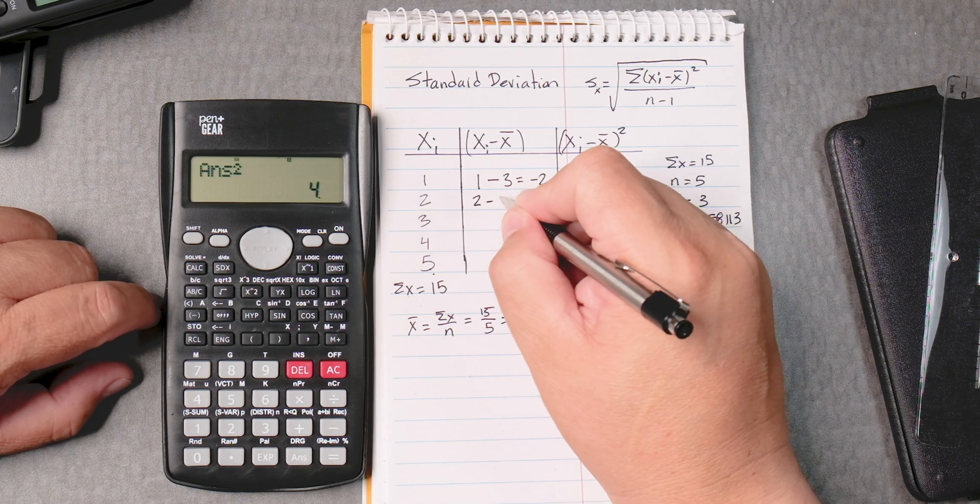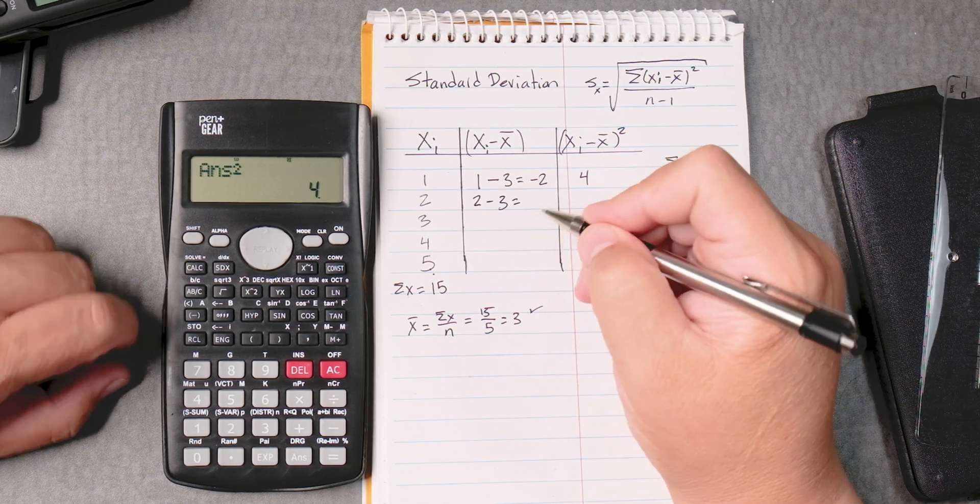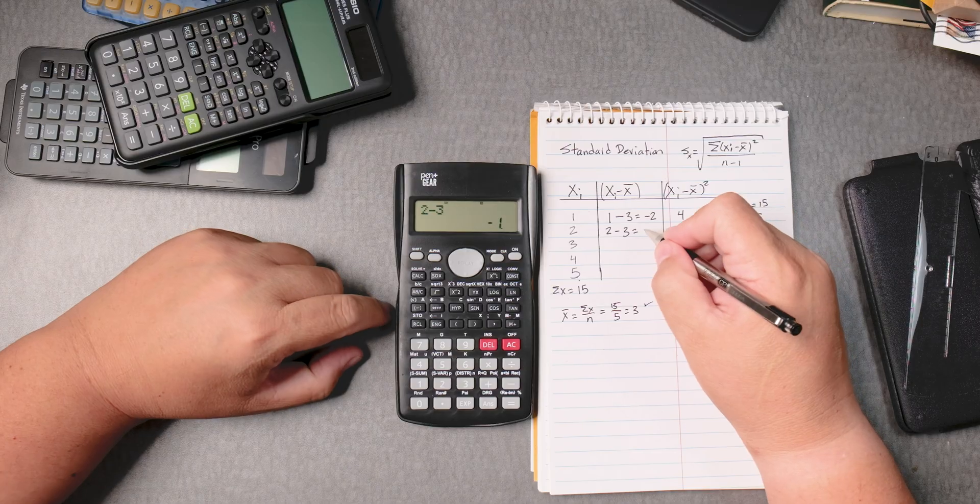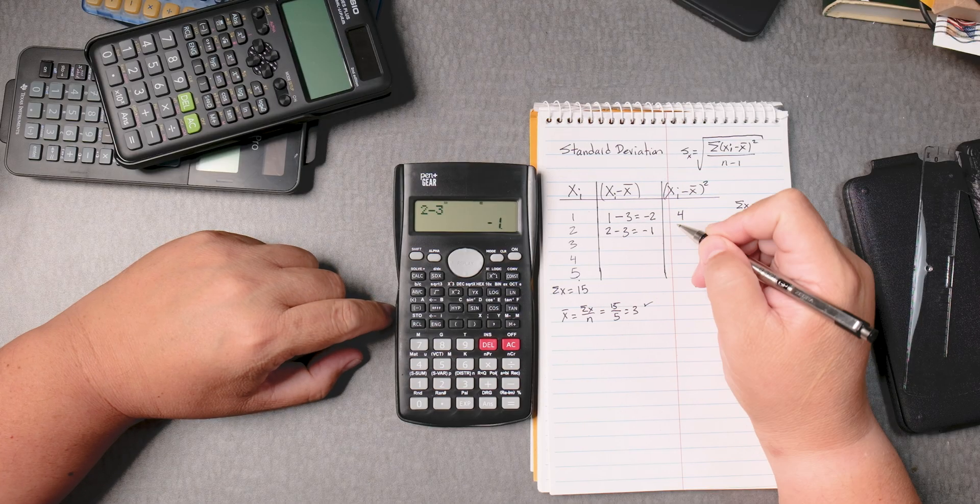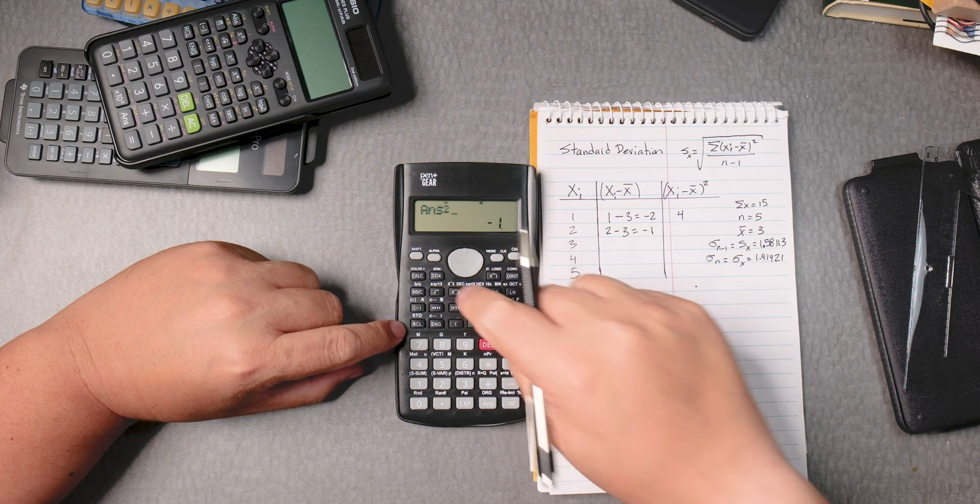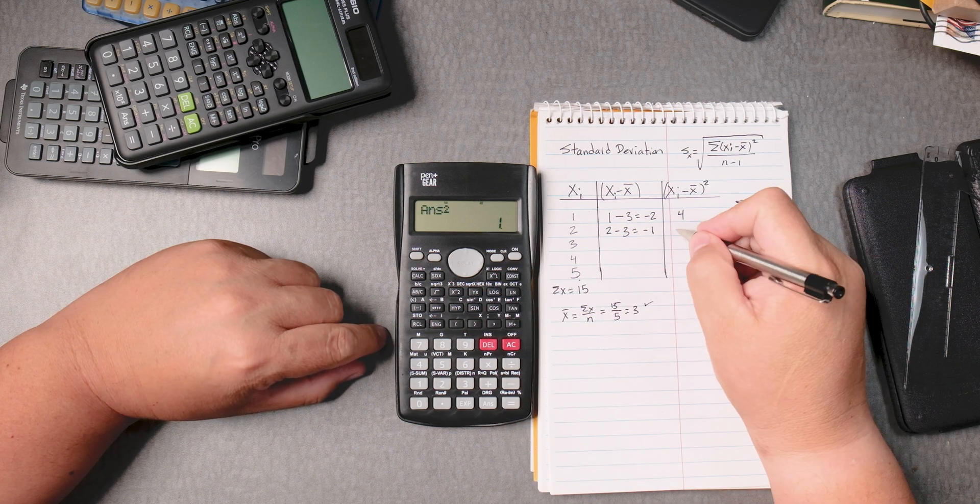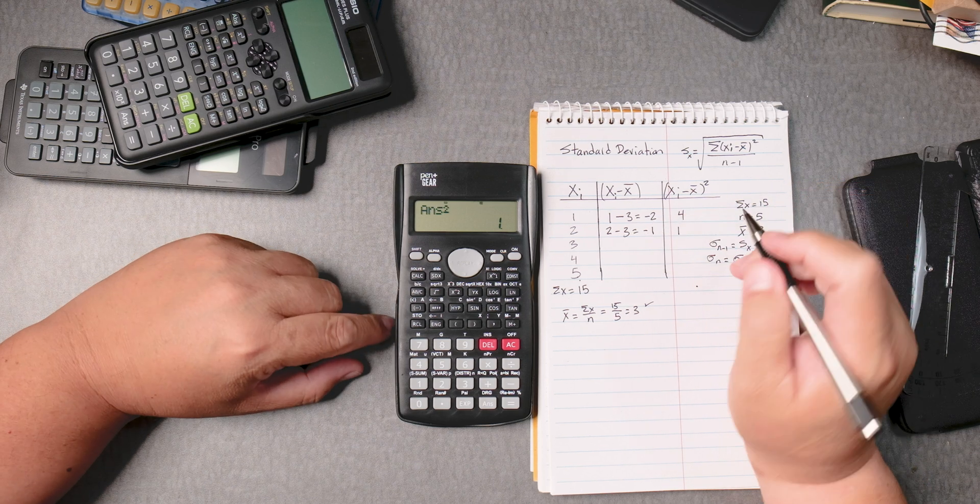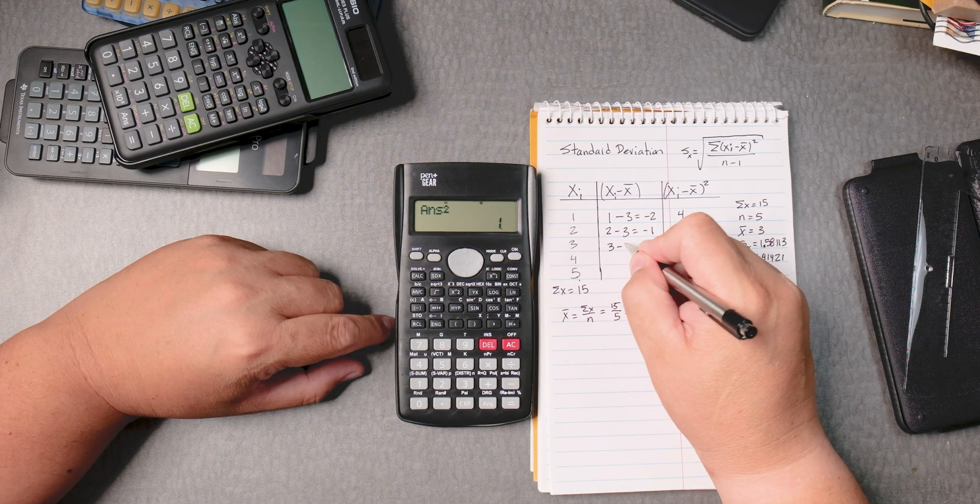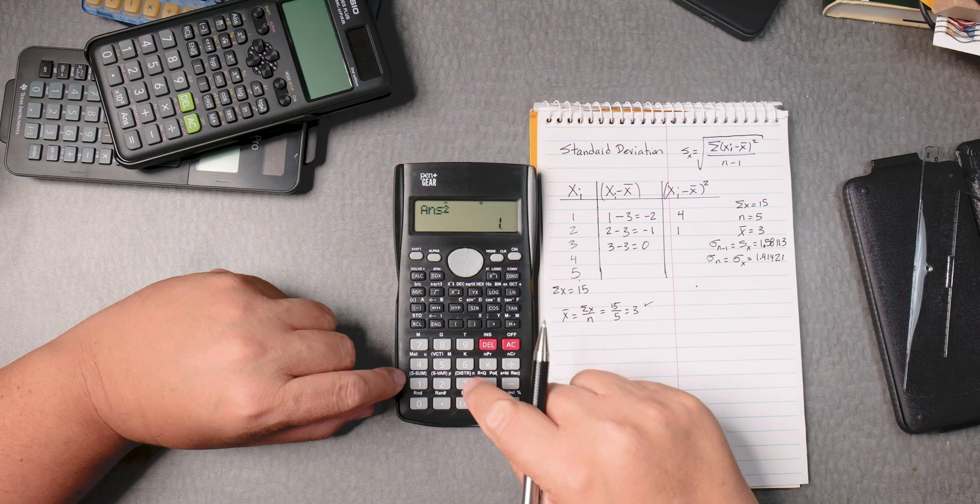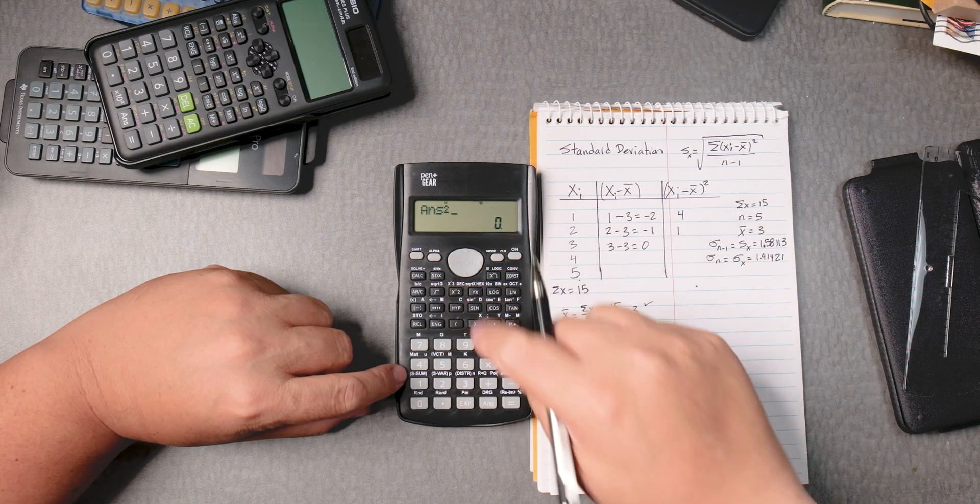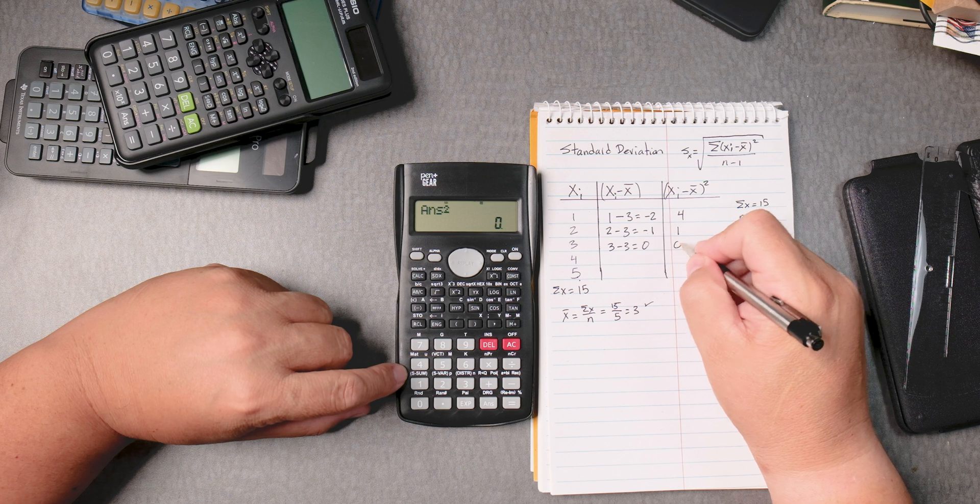So 2 take away 3 is our next data value. 2 take away 3 equals negative 1, and then we're going to square it, and then we press equals. That gives you 1. Negative 1 times negative 1 is 1. Negative 2 times negative 2 is 4. Then 3 take away 3, that's going to give you 0. 3 take away 3 gives you 0. And then we're going to square it, equals, that gives you 0.